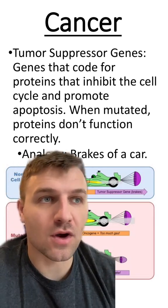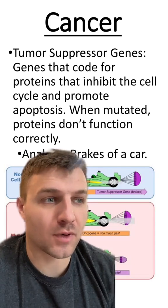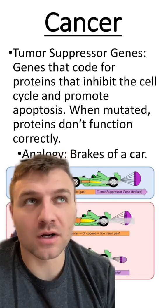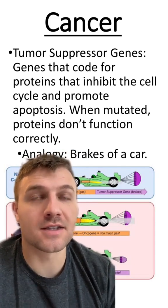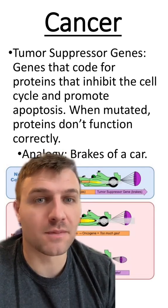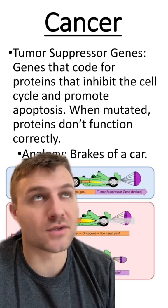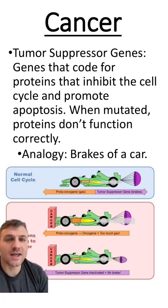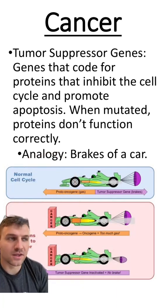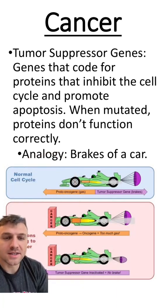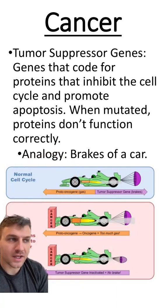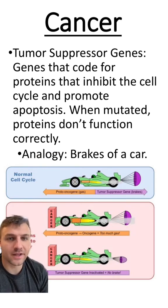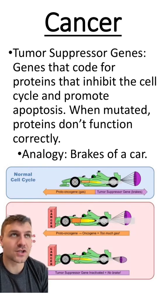When these genes are mutated, the proteins won't work correctly and the cell could develop into a cancerous cell. Again, the analogy with the car is that the brakes are like the tumor suppressor genes.